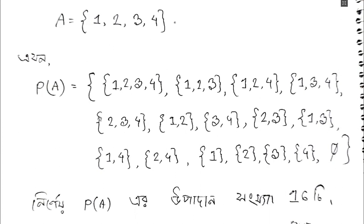So let's correct the set next. Once we see the values 1, 2, 3, 4, this set is different. If you read this, the elements are 1, 2, 3, 4.